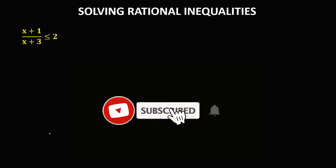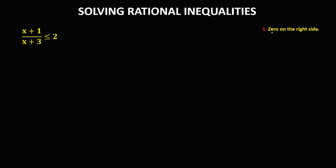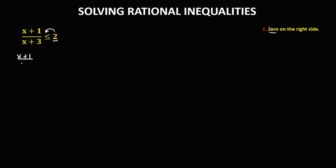Let's have this topic: solving rational inequalities. First, we need to check the given if the right side is equal to 0. Since on the given the right side is not equal to 0, we need to transpose this positive 2 to the left side. So this becomes x plus 1 over x plus 3 minus 2, less than or equal to 0.